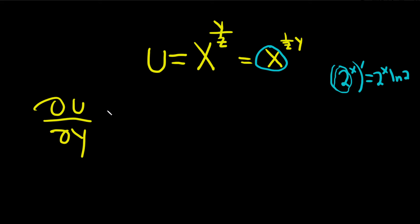So here, it would just be x to the 1 over z, y, ln of x, and then times the derivative of the inside. We have to use the chain rule. So we're taking the derivative of 1 over z times y.